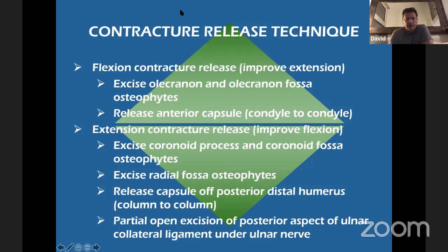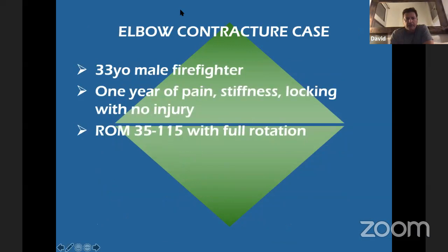For a flexion contracture release to improve extension: excise osteophytes in the back of the elbow — both from the olecranon and the olecranon fossa — and release the anterior capsule. For an extension contracture release to improve flexion: excise the coronoid process and coronoid fossa osteophytes, release radial fossa osteophytes to prevent radial head impingement, release the entire posterior capsule off the distal humerus from medial to lateral column, and do a partial open excision of the posterior aspect of the ulnar collateral ligament. Extension contracture release is not purely arthroscopic.